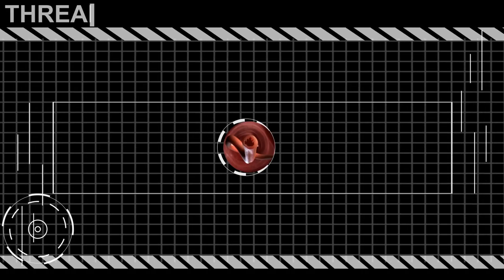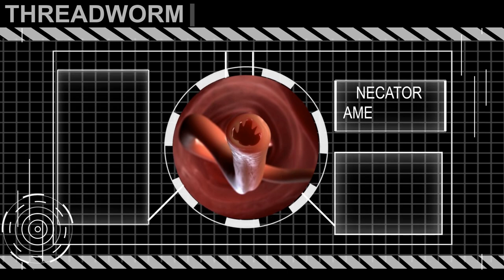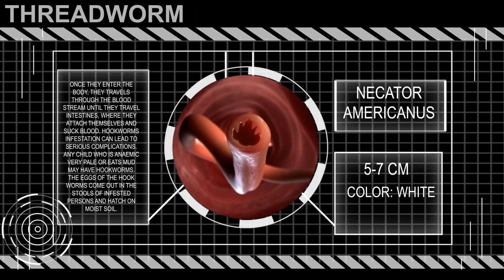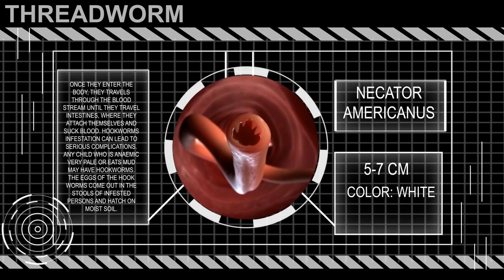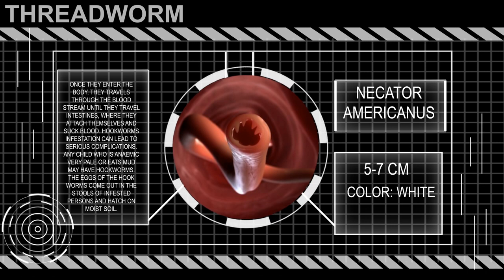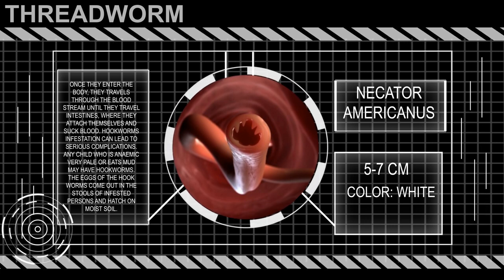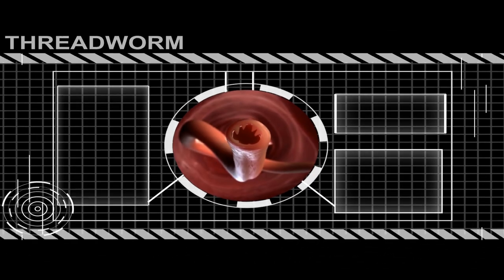The third and final type is known as the threadworm — very thin, thread-like, and white in colour. They lay thousands of tiny eggs just outside the anus, or near the vaginal opening among girls.